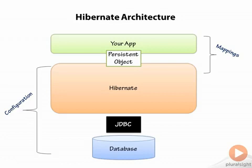Here you can see a high-level view of the Hibernate architecture. We start at an app that we create which interfaces with Hibernate. We have a persistent object in the middle here, because the persistent object lives both in our application's code and in Hibernate. Since we define mapping files which map the data in our Java objects to fields in a relational database, Hibernate reads this mapping to know how to use our Java objects. We can also use annotations to achieve the same effect, but in this course we'll be using XML mapping files.